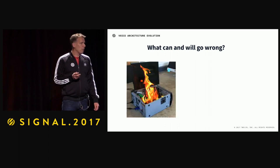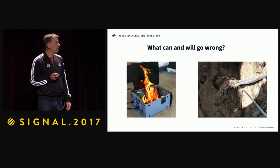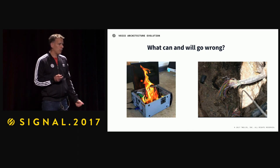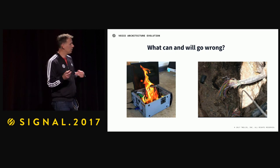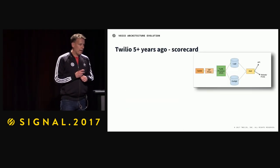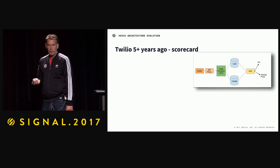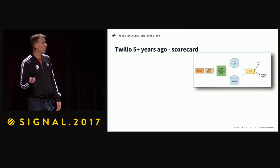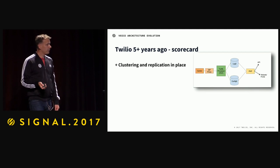Just a reminder: what can and will go wrong? A server will die. Networks will fail — between regions, between availability zones, between machines in a rack. If we go back and look at Twilio five-plus years ago and look at that architecture, how did we do?